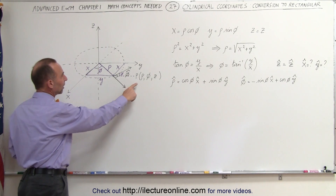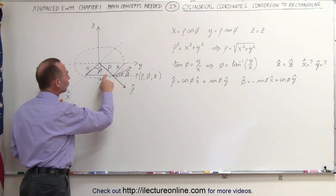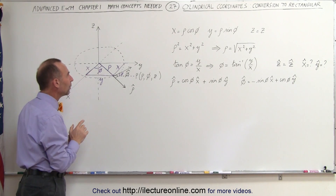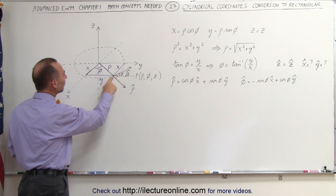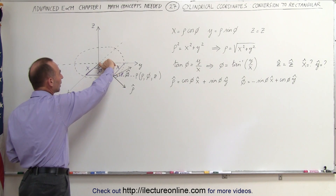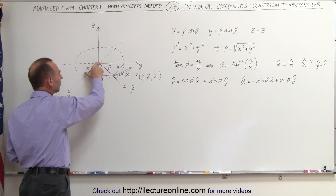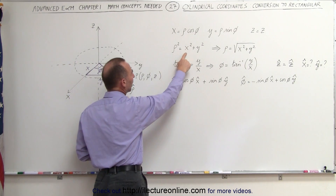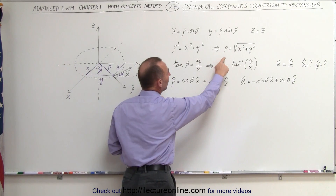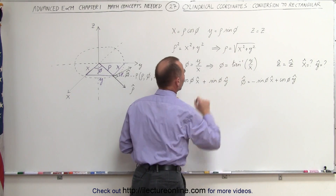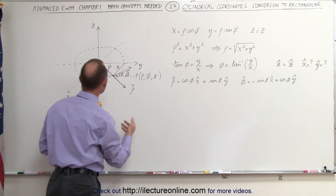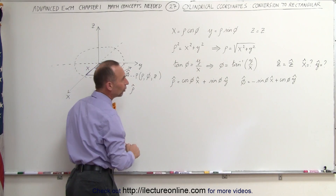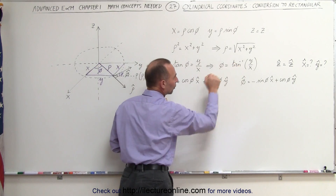We can express rho and phi in terms of x and y and the angle phi. If you want to find the length of rho in terms of x and y, we can see that rho squared equals x squared plus y squared, such that rho is equal to the square root of x squared plus y squared. The angle phi can be related to x and y using the tangent function, so that phi equals the arctangent of y over x.